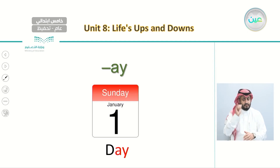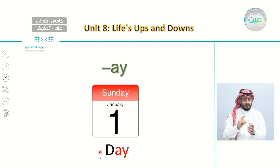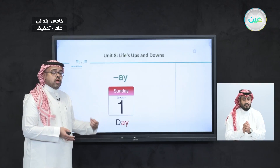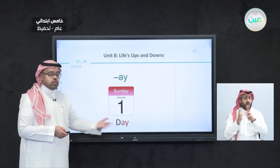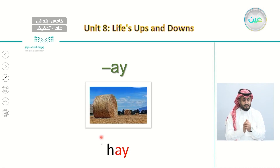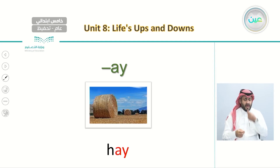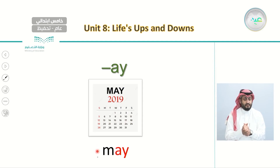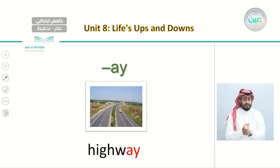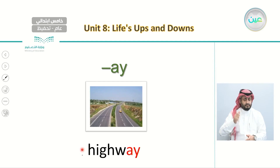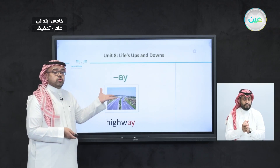Now let's move on to the second set — words that end with AY. The first word is day — say with me, day. We come across this word in many days like Saturday, Sunday, Monday, and so on. The next word is hay — say with me, hay — which is food for different animals. Then the month may — May. And finally, the last AY word is highway — say with me, highway.